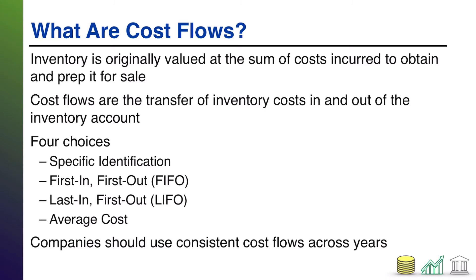The first choice is specific identification — track each item and its associated cost individually. This is what I mentioned with the milk, where you track every single gallon individually. This would require putting a separate barcode on everything, being able to tell one item apart from the next, and having every instance of that item with a unique entry and a unique price in the accounting system. As you can imagine, that's pretty meticulous and resource-intensive.